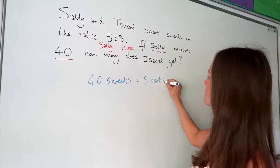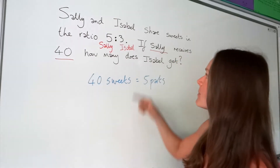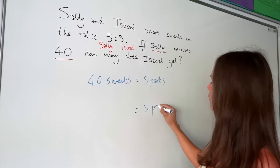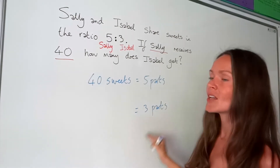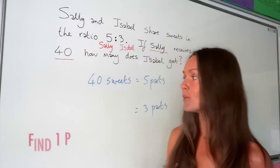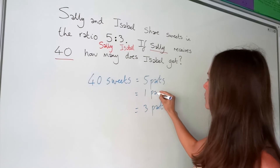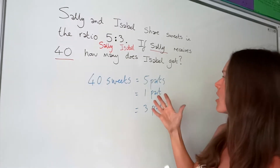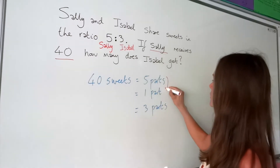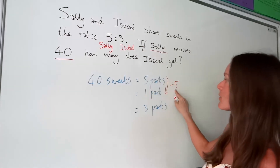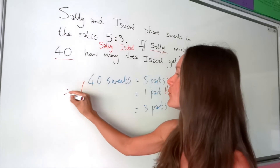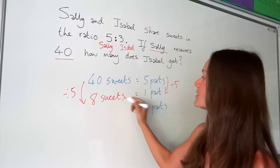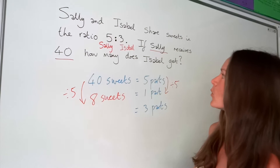In order to work out how many sweets Isabel gets - Isabel is three parts - we need to work out what three parts are. It's a bit awkward going from five parts to three parts, so we need to work out the value of one part first. If you've got five parts and need to work out one part, you divide by five. So forty divided by five is eight - one part is equal to eight sweets.